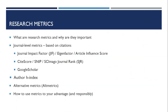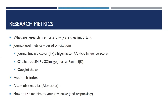Today's presentation will help make sense of research metrics — what they are and why they're important. I'll give an overview of the most common measurements of a journal's impact: the JIF (journal impact factor), the eigenfactor, article influence score, CiteScore, SNIP, the SCImago journal rank (SJR), Google Scholar, the author H-index, alternative metrics which track scholarship through social media and non-academic sources, and how to use metrics responsibly.